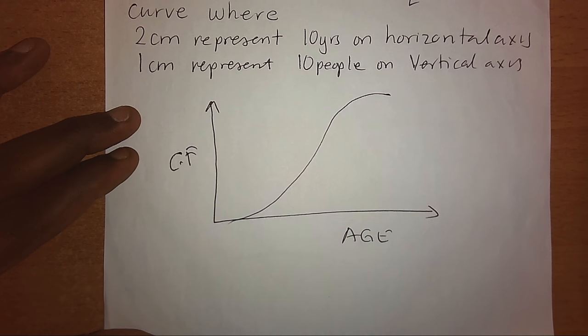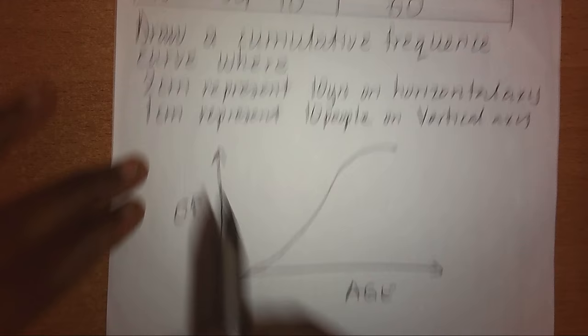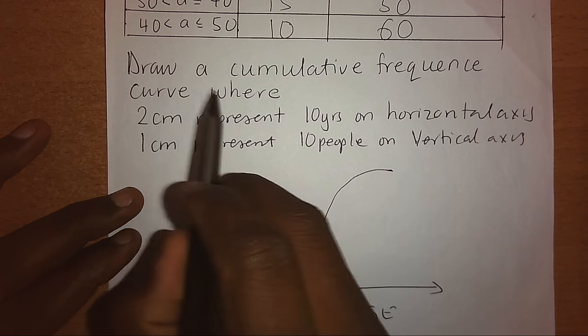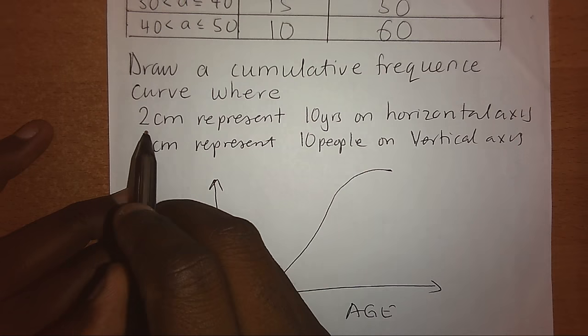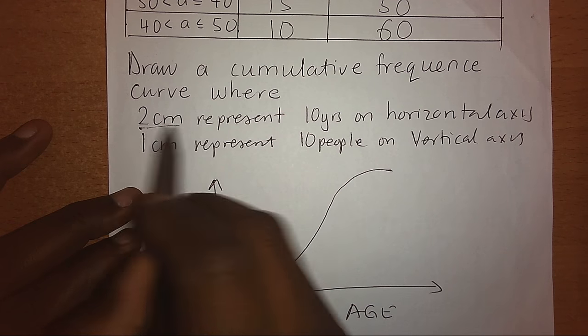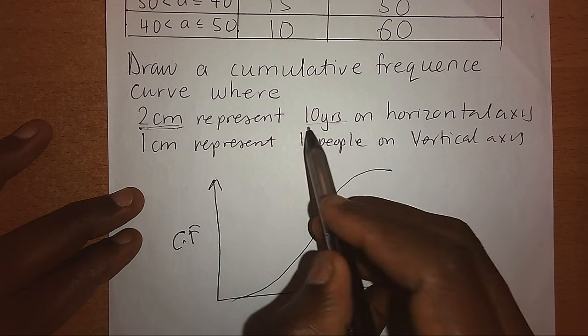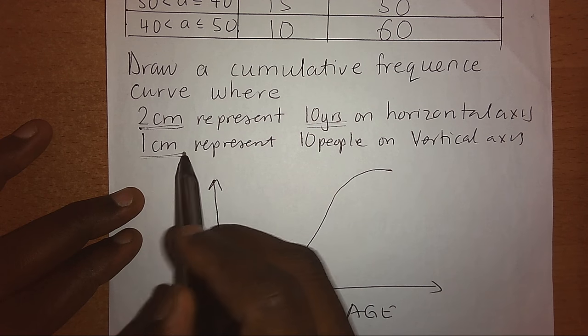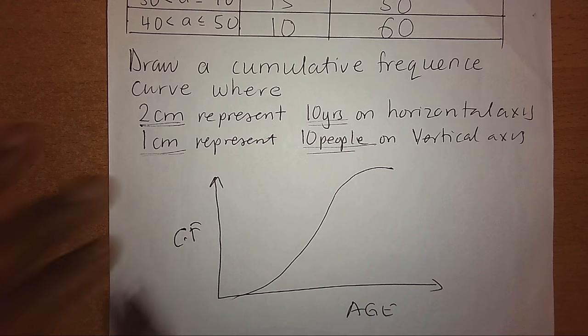Let's go to our actual graph. We are given the scale: on the horizontal axis, 2 cm will represent 10 years, and on the vertical axis, 1 cm will represent 10 people.